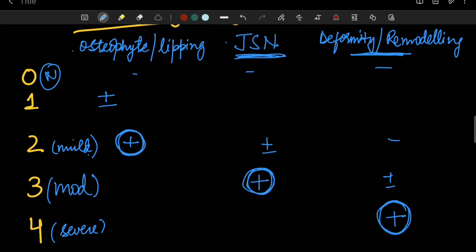Grade 1 is basically a possible presence of an osteophyte. Grade 2 is signified by the definitive presence of an osteophyte. Grade 3 will have definitive presence of joint space narrowing, and grade 4 will have definitive presence of remodeling or deformity in the joint. Thank you.